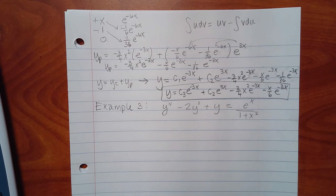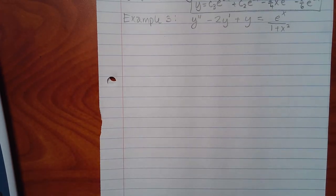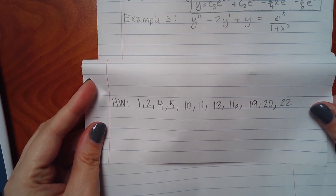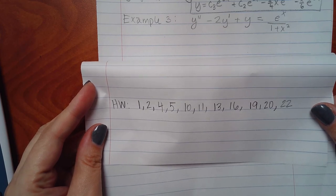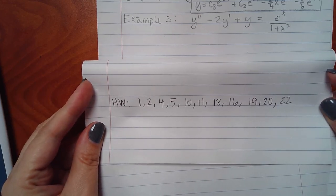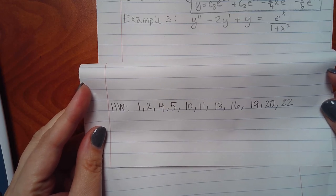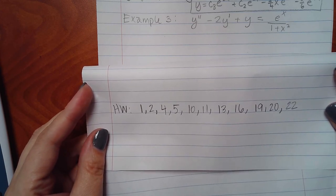The homework for this section includes problems 1 through 5 to start — you have enough from today to do those. Problems 10 and 11 you might attempt. Problems 19 through 22 are initial value problems, which require all the same steps plus extra work applying initial conditions. Examples 3 and 4 will be covered next class on Tuesday, which will give you enough to complete the entire homework set.